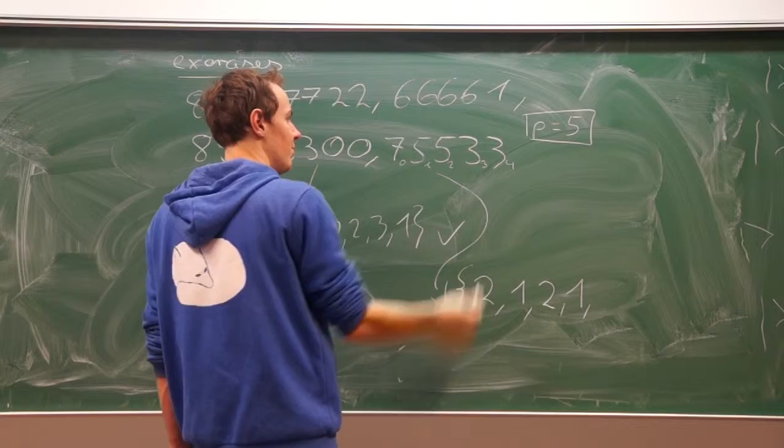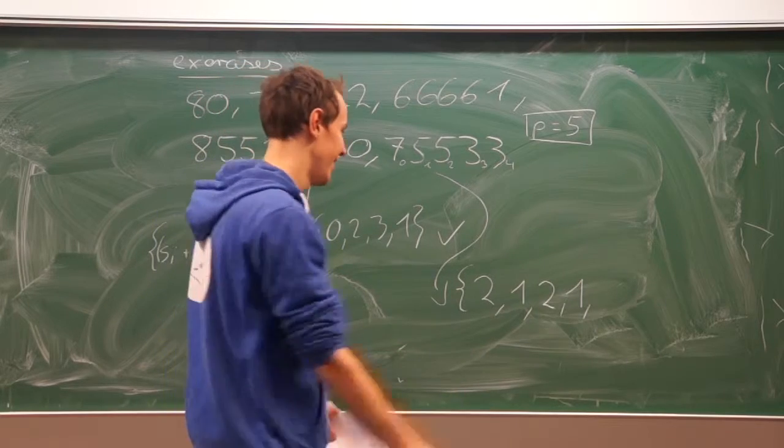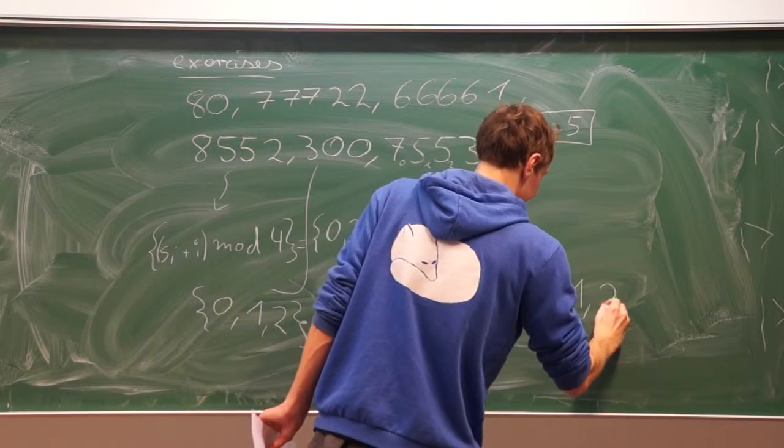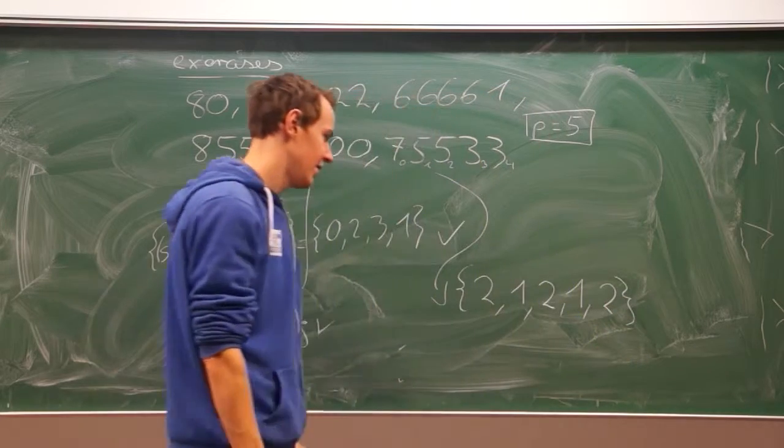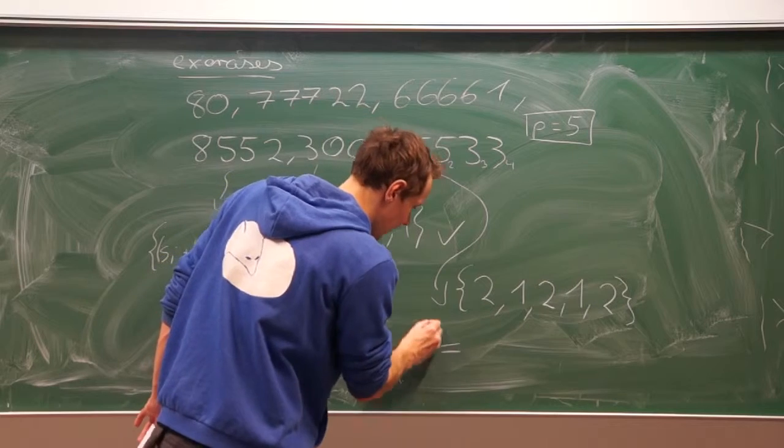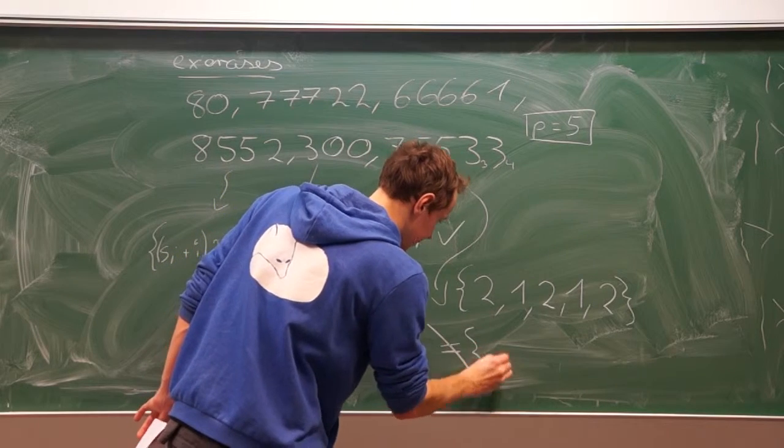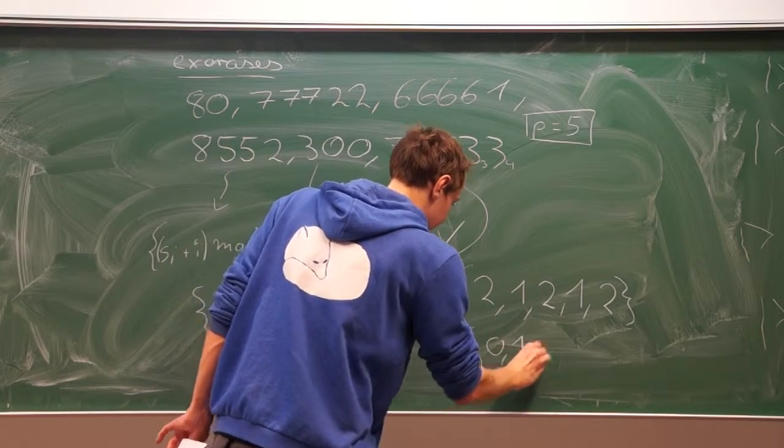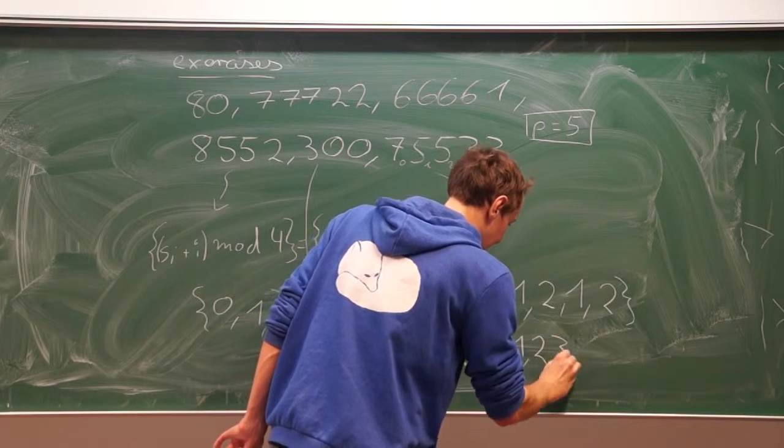And there's a seven again. So, here is a two again. So, this set does not fulfill rule number two because it's not equal to zero, one, two, three, and four.